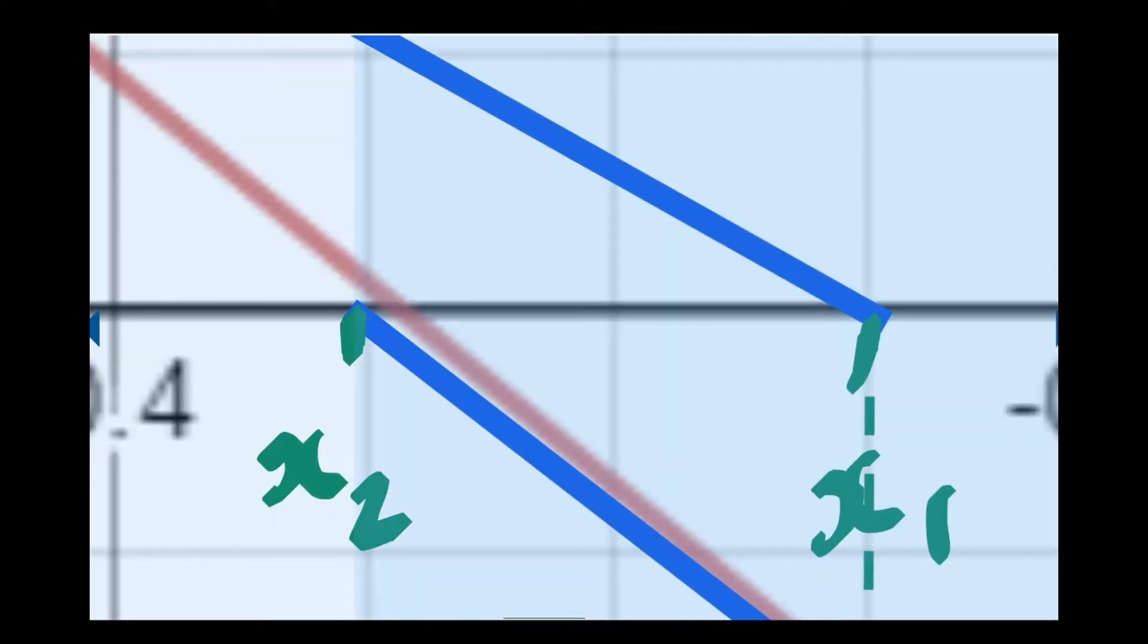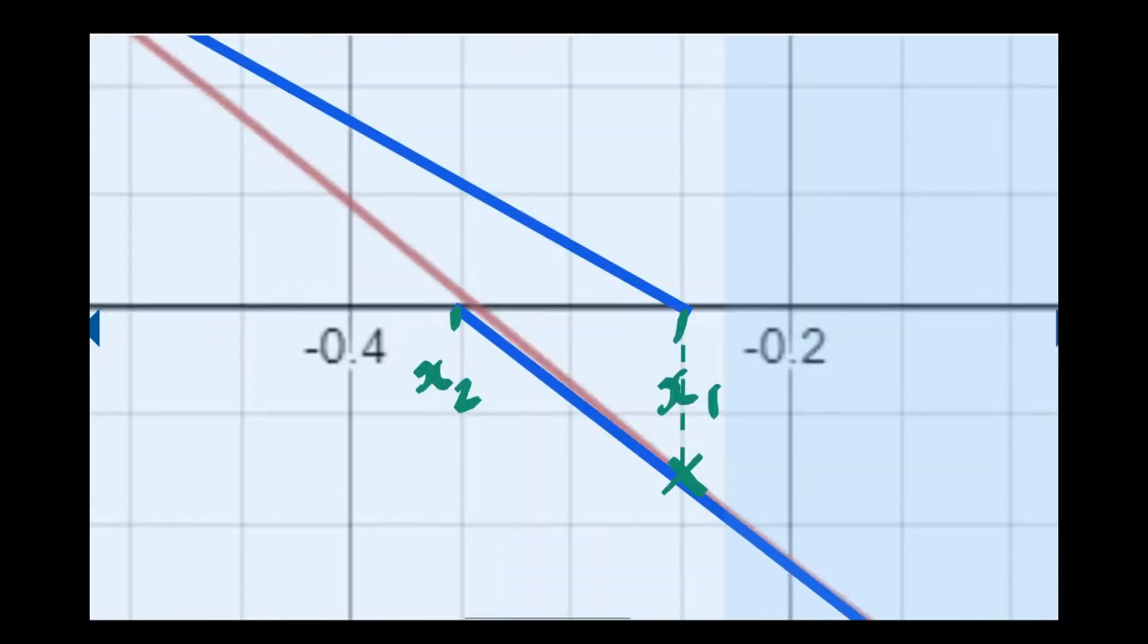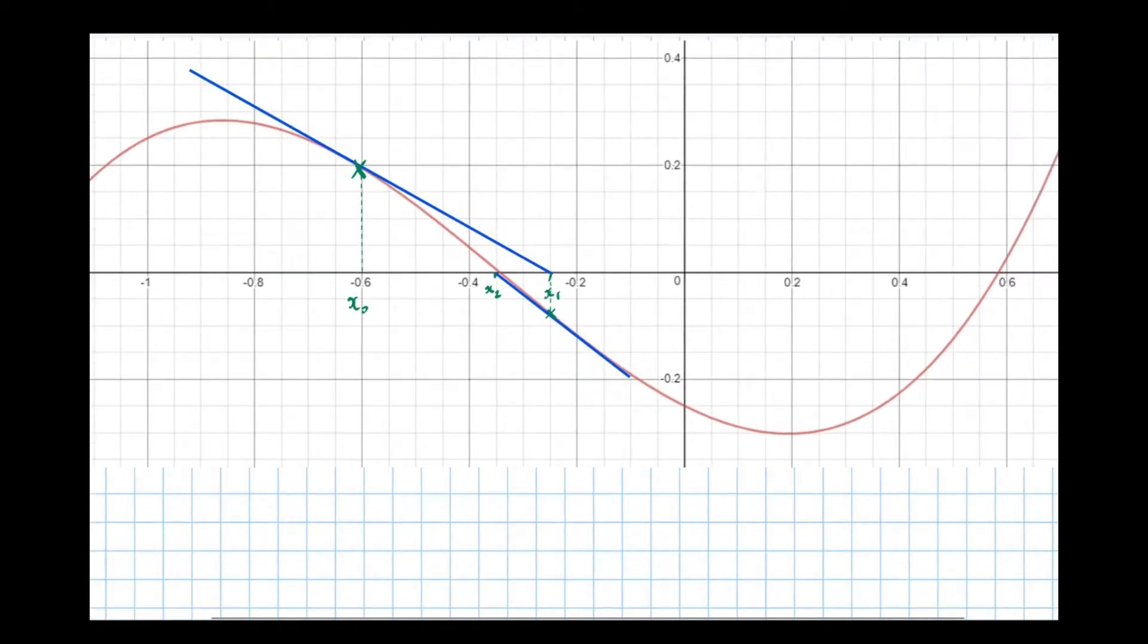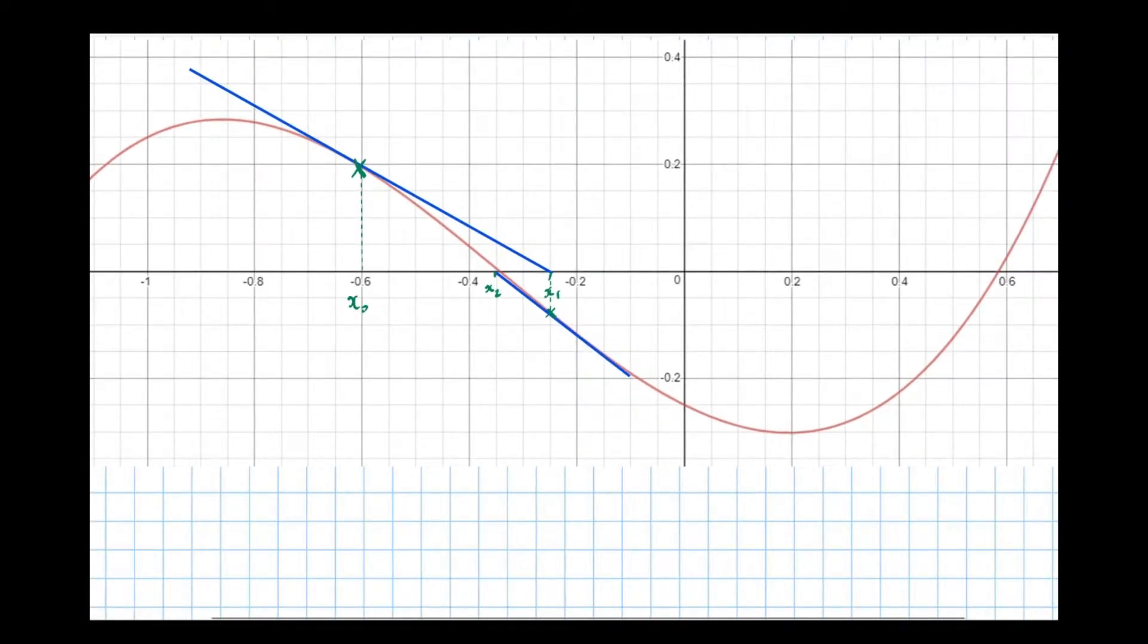Zoom right in. Draw a tangent again. We can see that we're getting forever closer to the root. Draw a tangent where it crosses the axis is our new guess. If the Newton-Raphson method works, we'll get closer and closer to this root by continually drawing tangents.